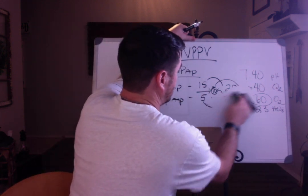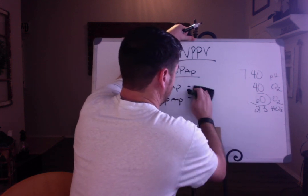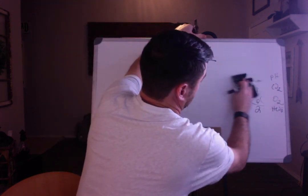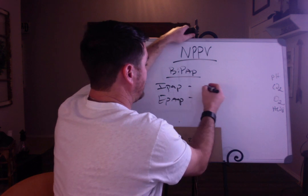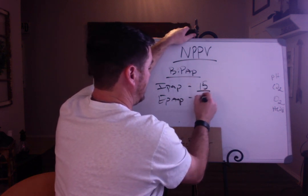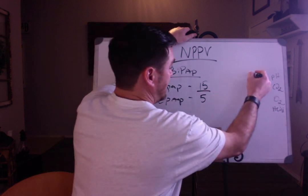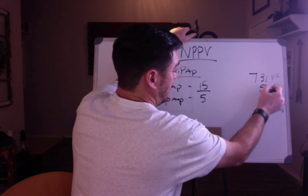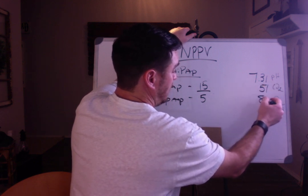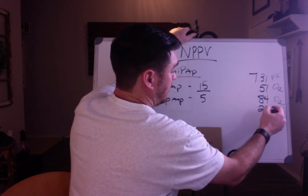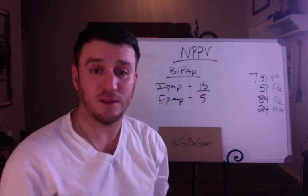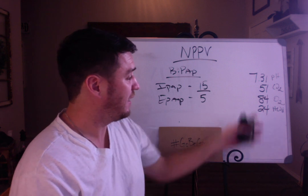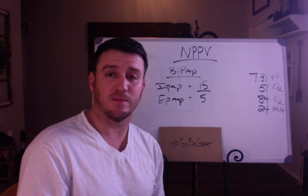Let's do another example. We stay with 15 over 5, and now we have this blood gas: pH 7.31, CO2 51, O2 84, and bicarb 24. So on BiPAP settings of 15 over 5, we draw a blood gas and get 7.31, 51, 84, and 24.